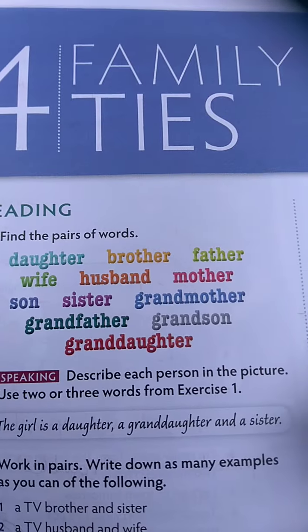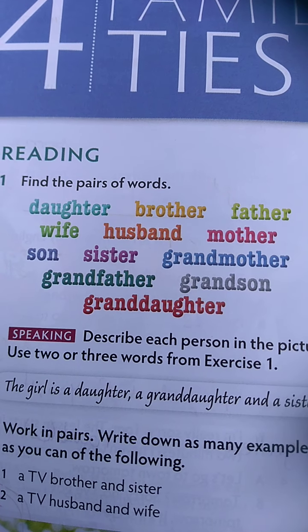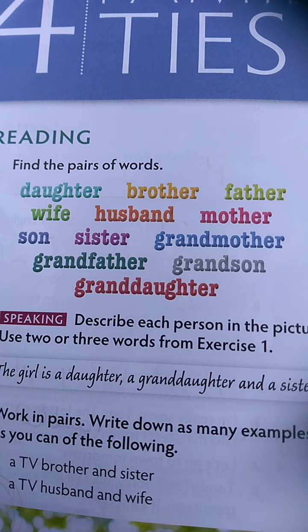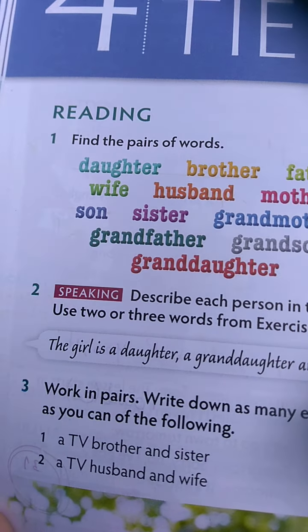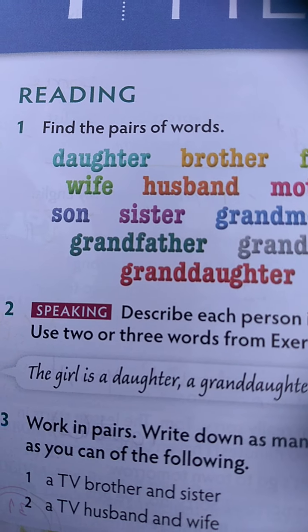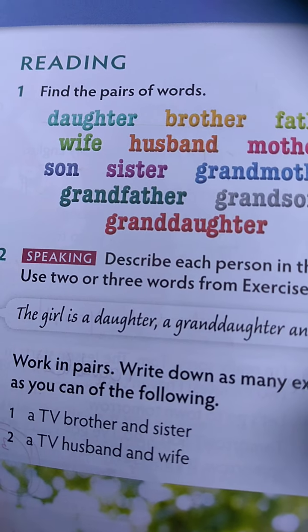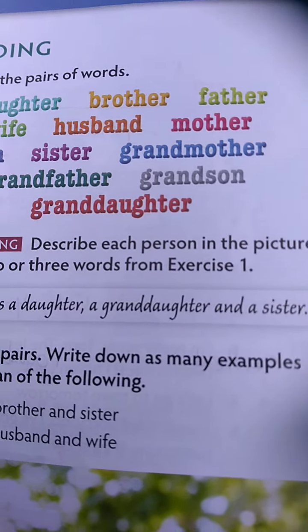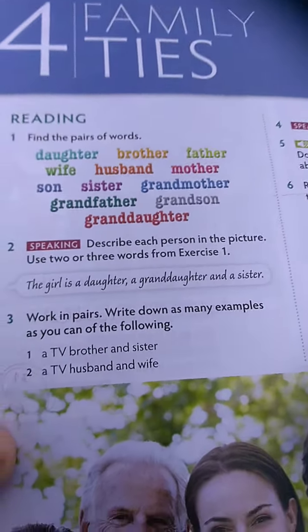Let's find the pairs then. Daughter goes together with son — torej hči in sin grej sta skupaj. Brother goes together with sister — brat in sestra. Father goes together with mother — oče in mati. Wife goes together with husband — torej žena in mož grej sta skupaj. Grandmother goes together with grandfather — babica in didek grej sta skupaj. And grandson and granddaughter grej sta skupaj, ker je to pač vnukinja — ena taka družinska vez.